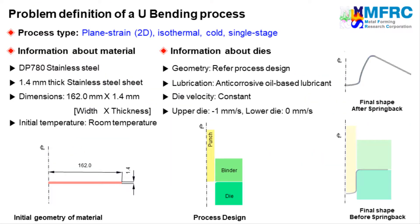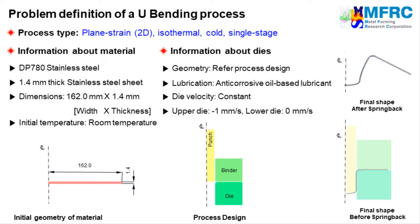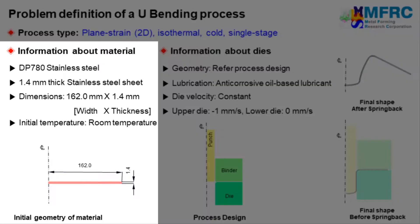Let's get started with the process type first. Since the deformation of the workpiece is insignificant in the third dimension when compared to the planar deformation, we will carry out a 2D plane strain simulation. The temperature change is neglected in the simulation. The information about the material is given on the left side. The dimensions of the workpiece are as shown in the figure on the left. The material of the workpiece is a stainless steel grade and its initial temperature is equal to that of room temperature.